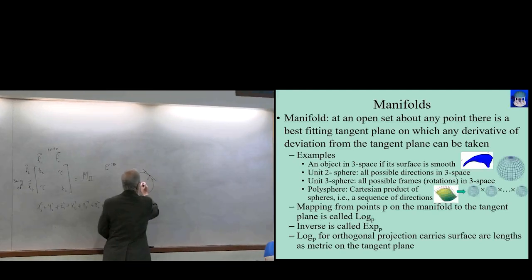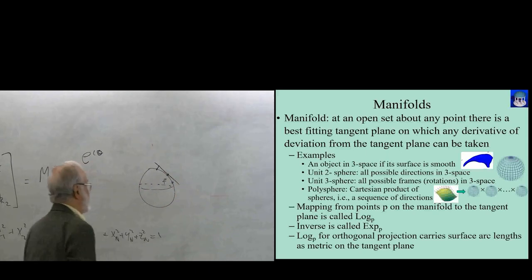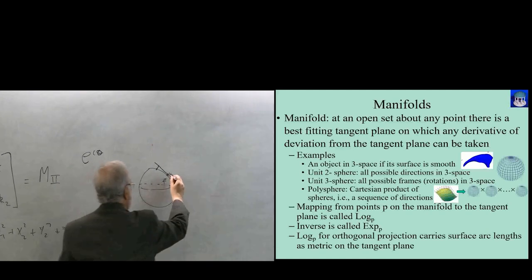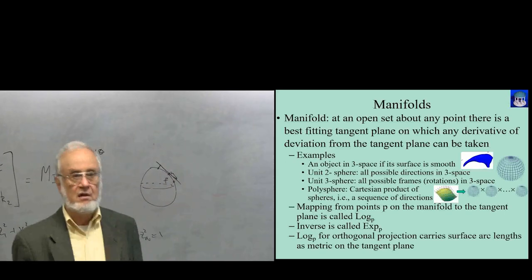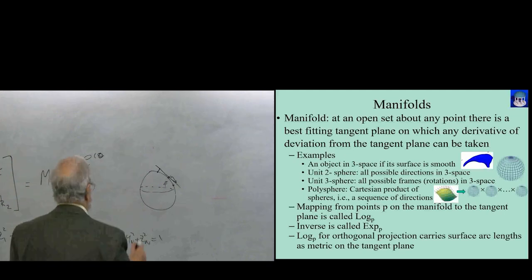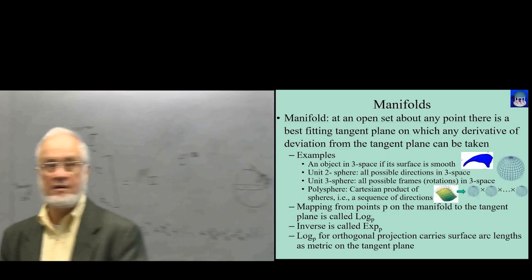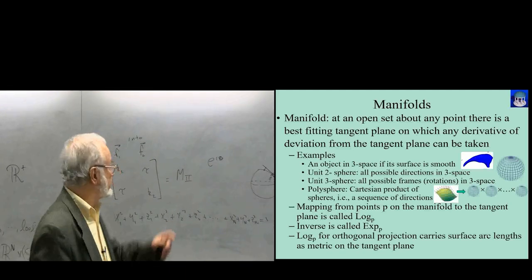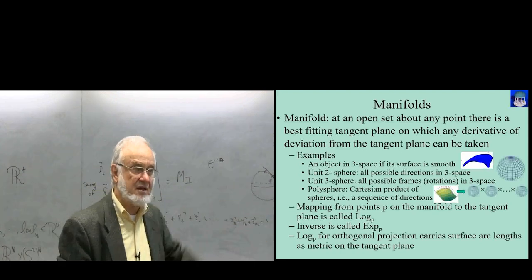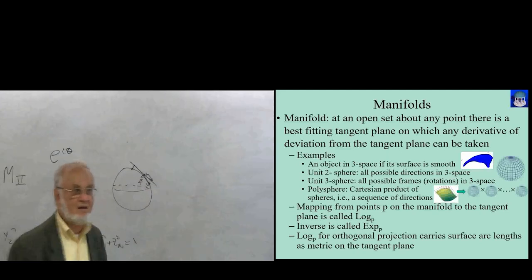The log map goes from the manifold to the tangent plane. The exponential map goes from the tangent plane to the manifold. For a sphere, if you talk about any place and the distance from it to P, it's some Euclidean distance on the plane, but that's not the same as the arc length distance on the sphere. It turns out to be useful to equip this log transformation not with Euclidean metric distances, but with the distance function of the distances on the sphere.